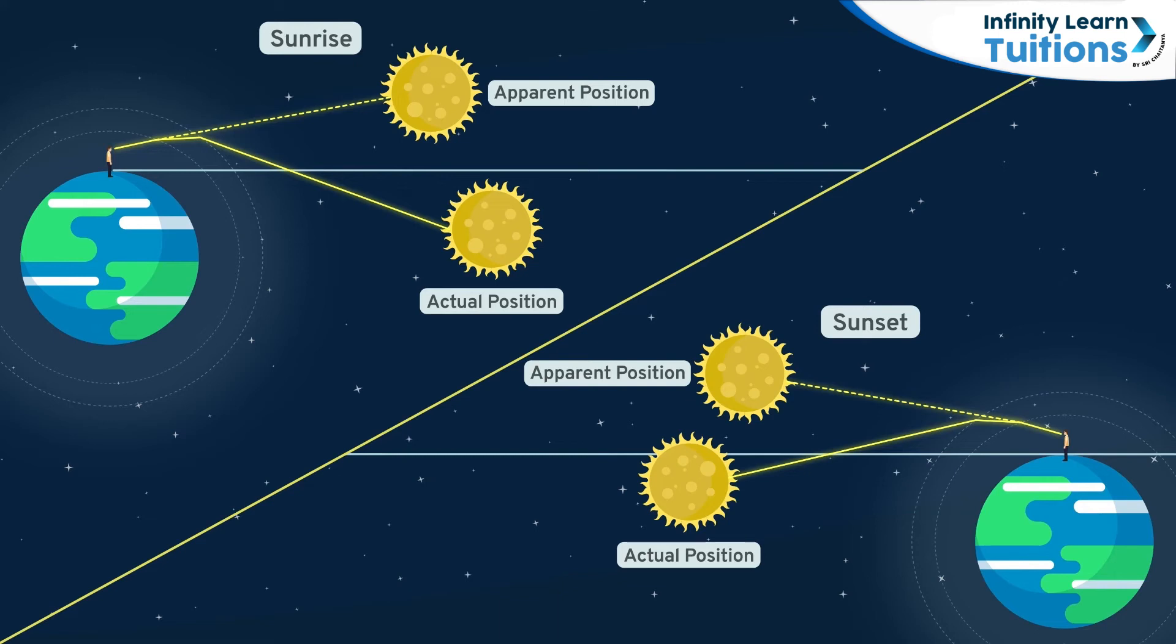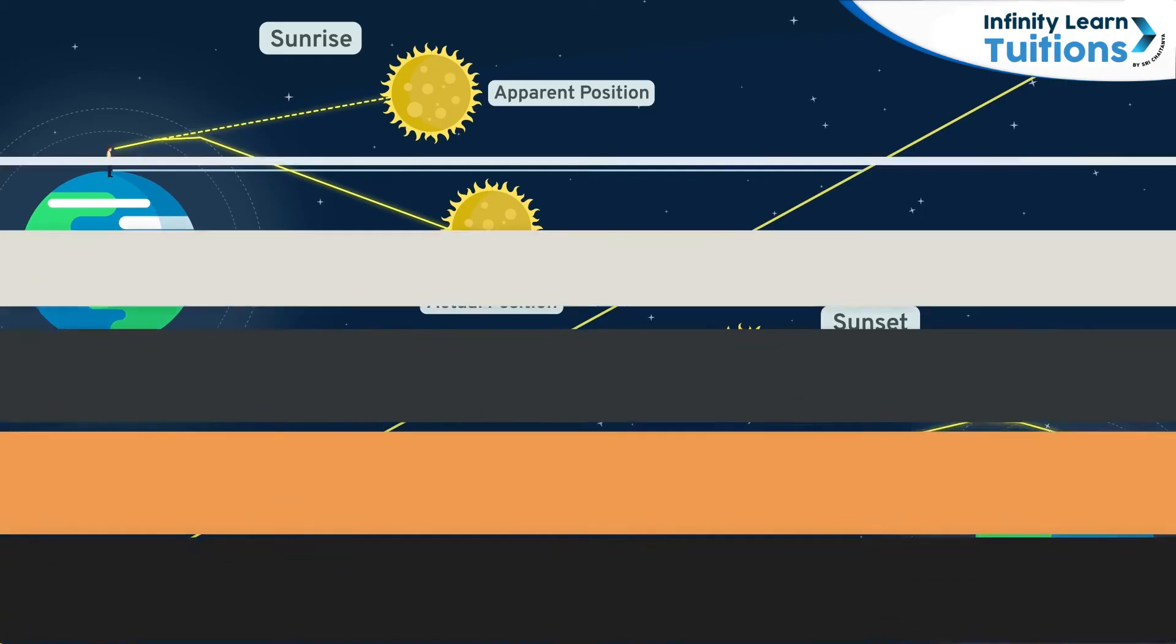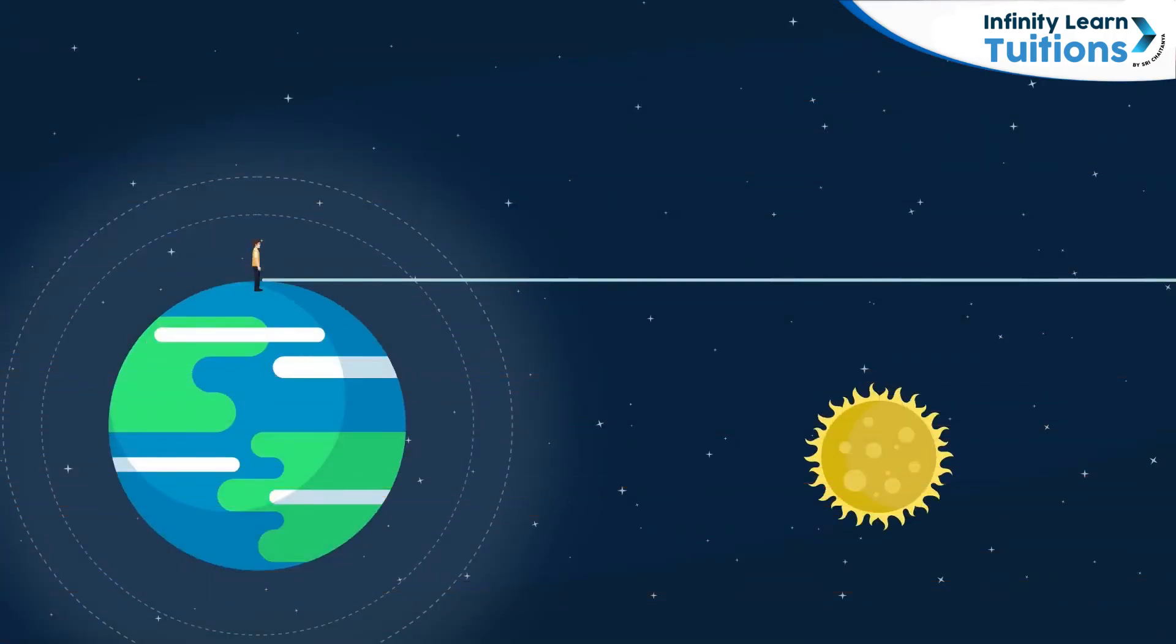It was calculated that we see the sunrise two minutes early and the sunset two minutes later than its actual occurrence. Refraction or bending of light also causes the sun to appear squashed during the sunrise and sunset.